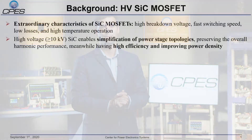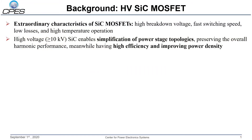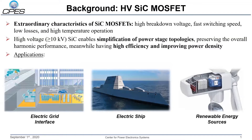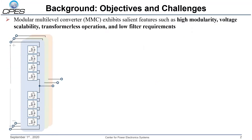In this video, I will be talking about the assessment of a medium-voltage power cell based on a high-current 10 kV silicon carbide MOSFET half-bridge module. High-voltage, fast-switching, low-loss silicon carbide MOSFETs enable simplification of power-stage topologies, improving power density and efficiency of power electronic systems. This is particularly important for medium-voltage applications where land and space are very limited and expensive, such as MVDC distribution in high-populated urban areas, DC power systems for more electric ships, and renewable energy sources. MMC is increasingly considered due to its features of high modularity, voltage scalability, transformer-less operation, and low filter requirements.